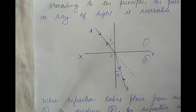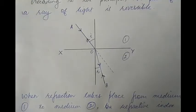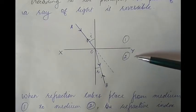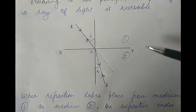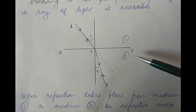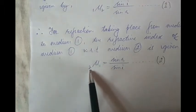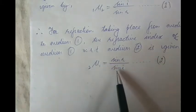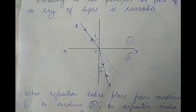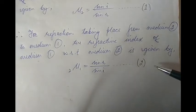This is what we see to be true in reality also. Hence, for refraction taking place from medium 2 to medium 1, the refractive index of medium 1 with respect to medium 2 is given by μ₁₂. Since R is the angle of incidence and I is the angle of refraction, μ₁₂ equals sine R divided by sine I. This is our equation 2.